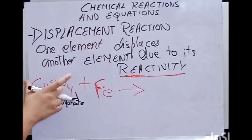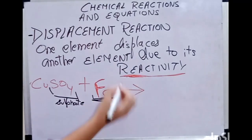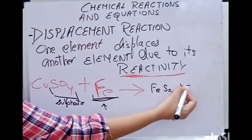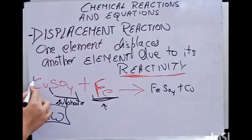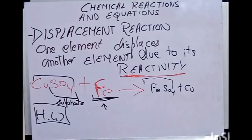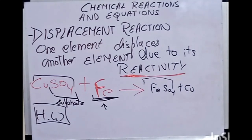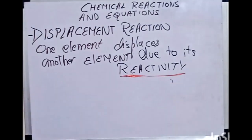So iron displaces copper to form iron sulfate and copper. Copper here is reddish-brown in color. Another example using the same pattern: Zn + CuSO4 → ZnSO4 + Cu. Here zinc is in solid state and CuSO4 is in aqueous state, giving ZnSO4 in aqueous state and Cu in solid state.